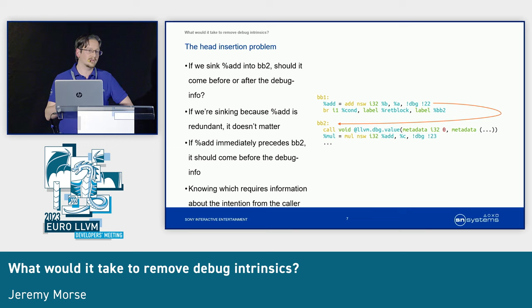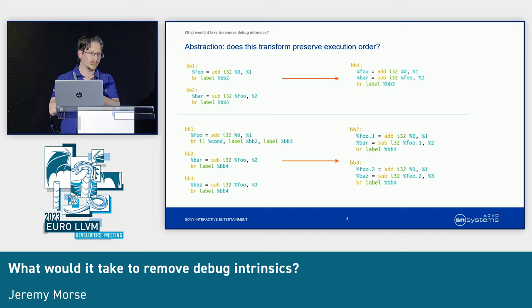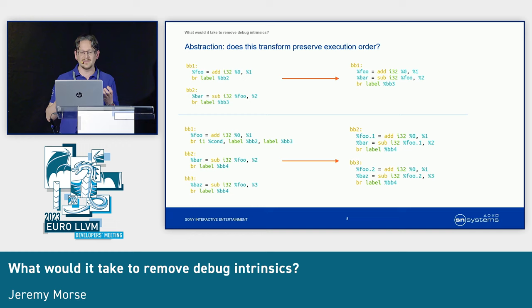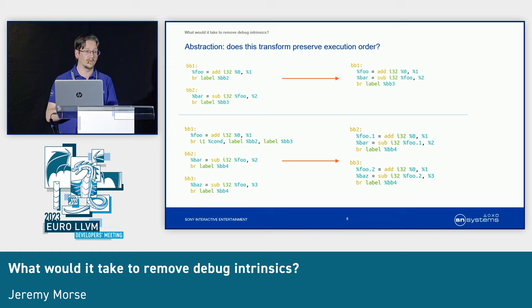This is bad and awkward and it needs solving. I've got a proposal of the abstraction that we need to add to the instruction API that can let us do all of this by default. The key question is: does the transformation you're performing intend on preserving the original source instruction order? If you look at the top part of the slide, we've got our two blocks again, and moving to the right hand side they've been folded together. The instruction order is just the same — add, subtract, branch. I call this a preserving transformation because it is the intention of the transformation that they stay in that original order.